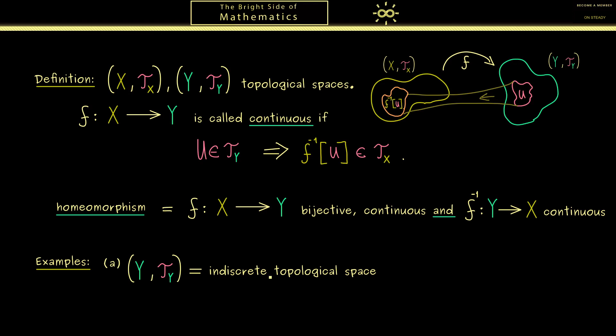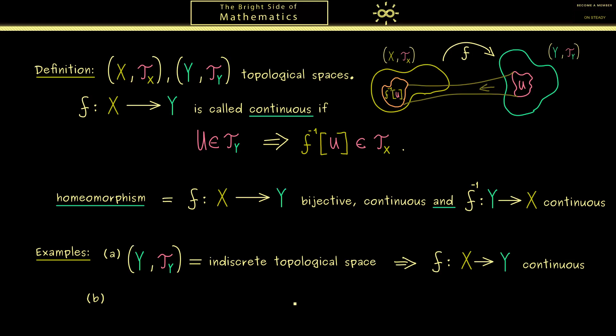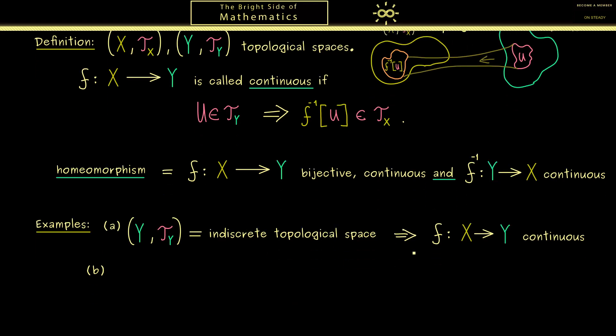However, this means there are only 2 sets to check for this implication here. Or in other words it does not matter which topology Tx for X we choose, because the only possible pre-images are the empty set and the full space. Therefore this here is always fulfilled. Hence then every map f from X to Y is continuous. So you see this is a nice example because it immediately gives us a lot of continuous maps.